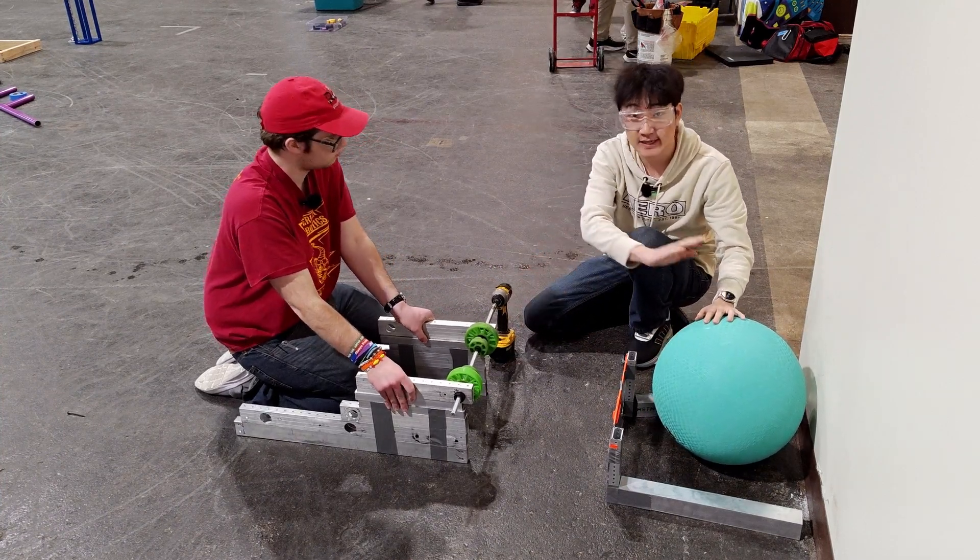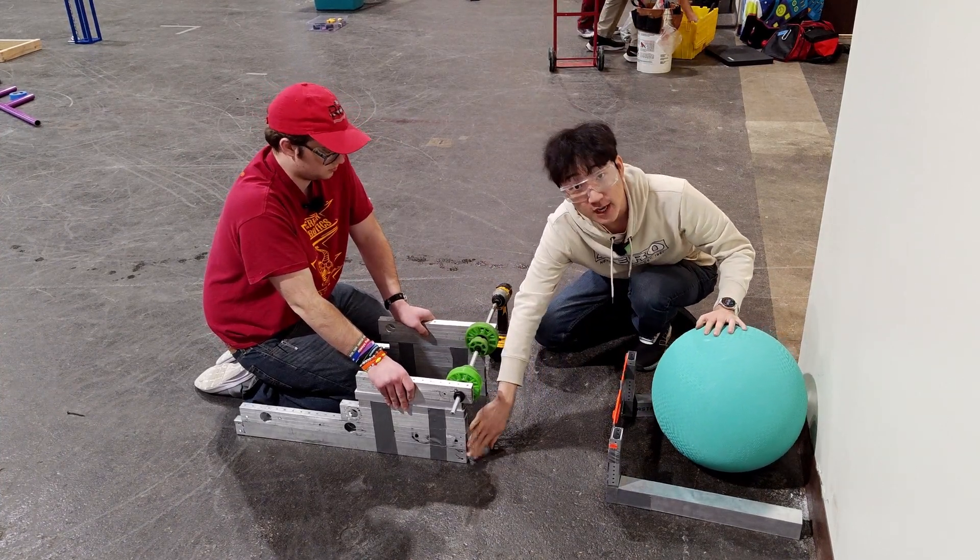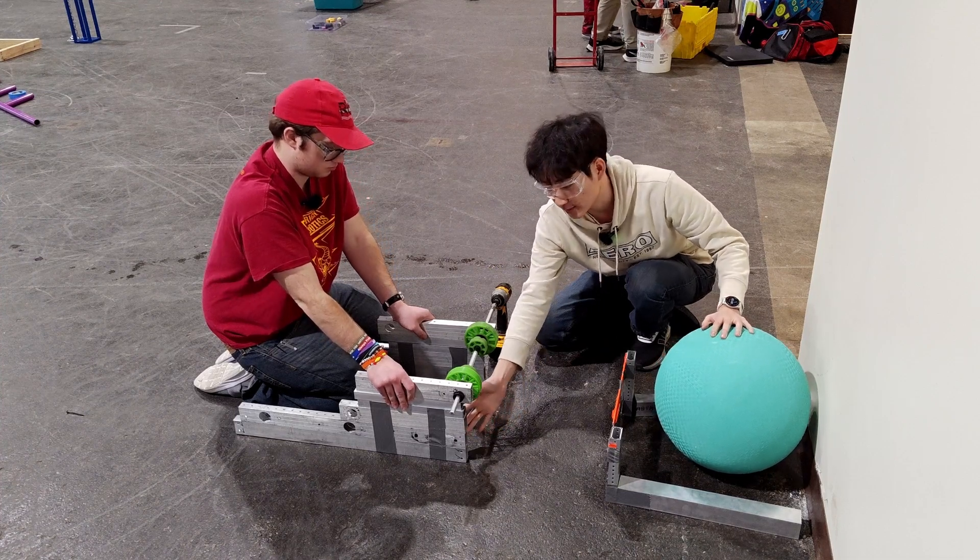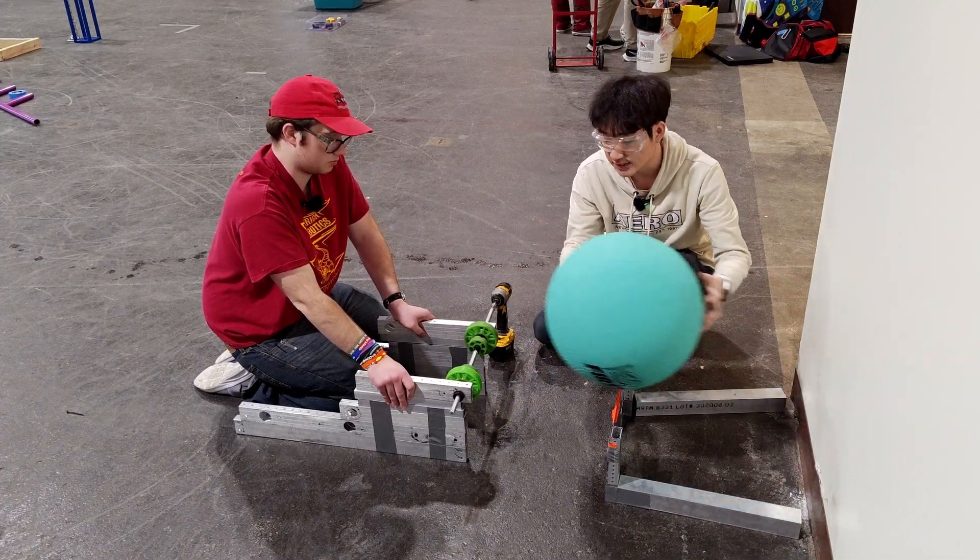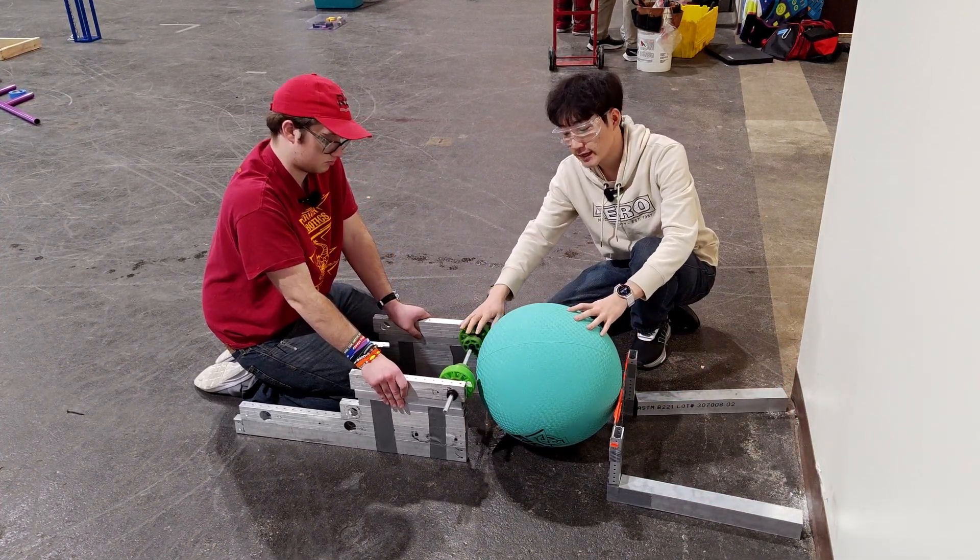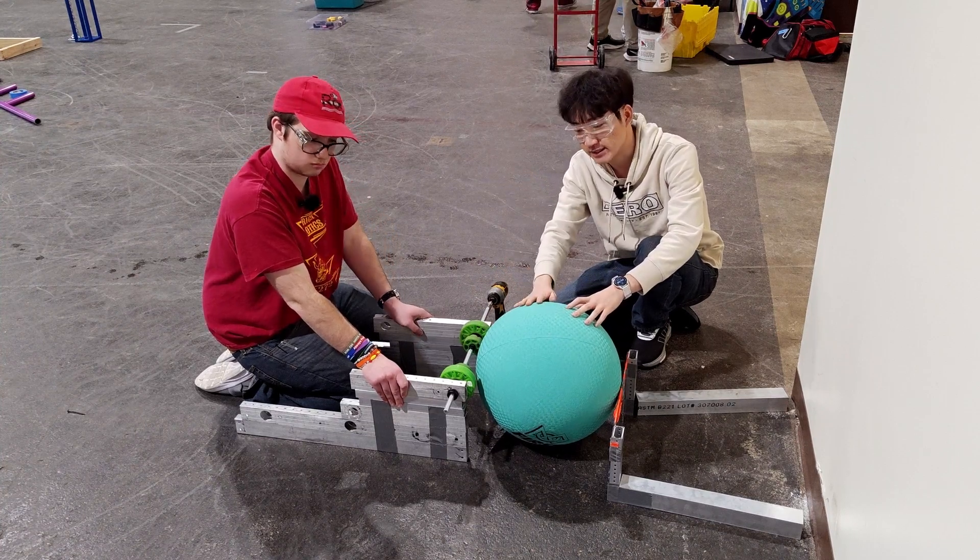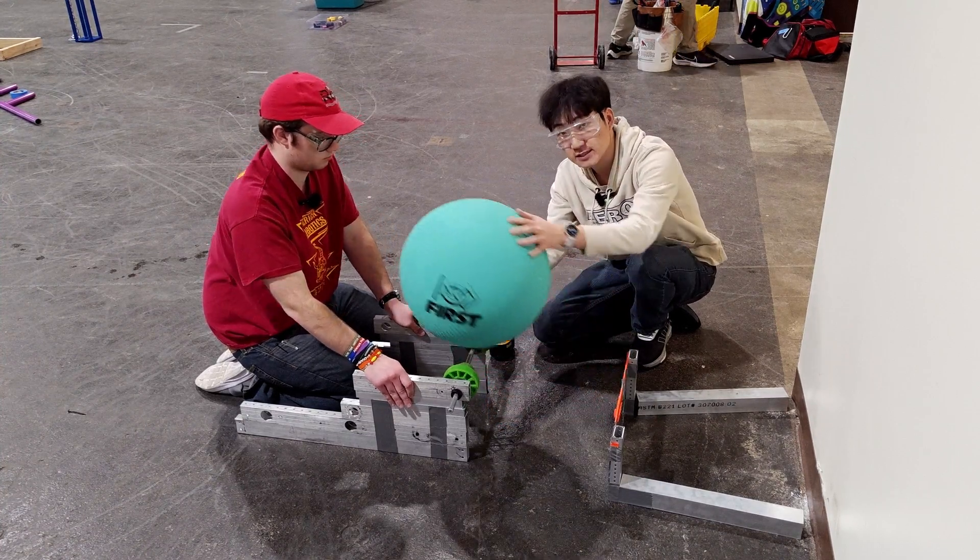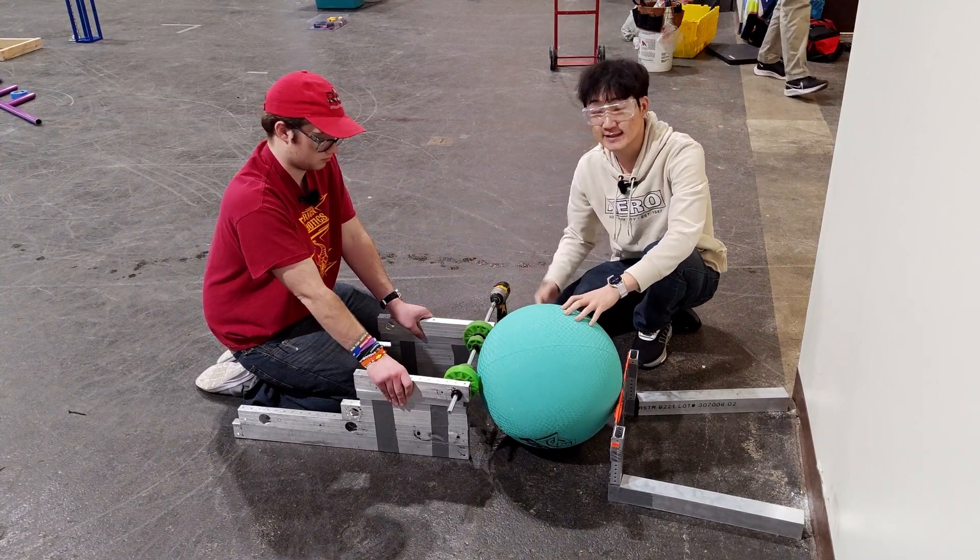The algae doesn't bounce around too much, goes nice and smoothly in. And we tried out a couple of different height combinations with the blocks here, and we landed at 9 inches, so that the wheels end up over halfway over the height of the algae. And this helps to prevent it from being sucked back into the robot.